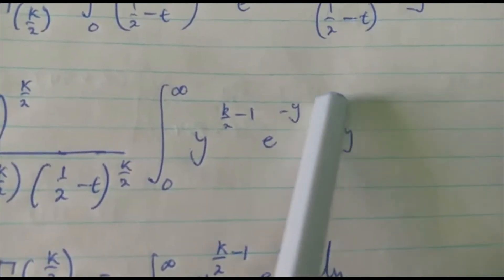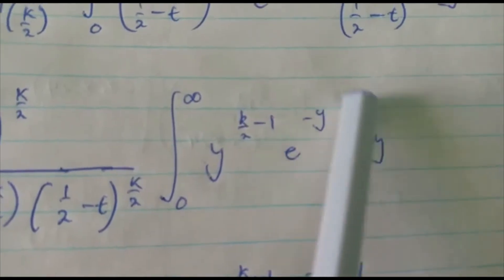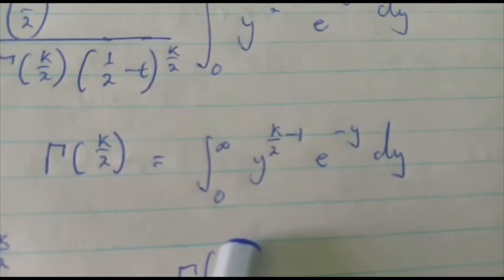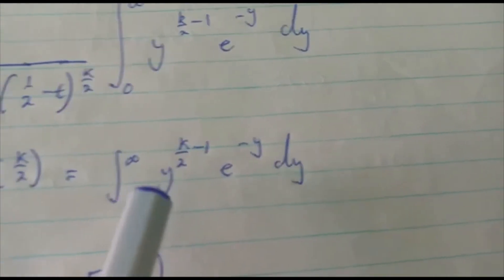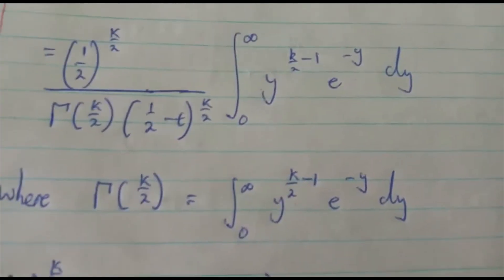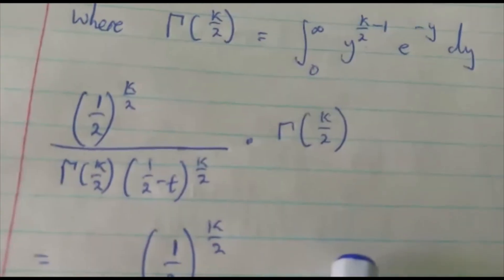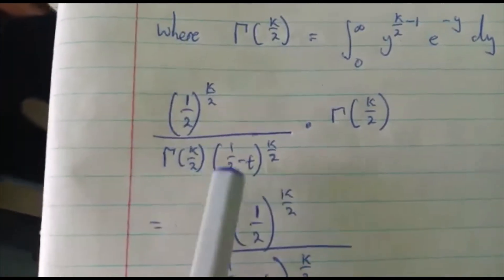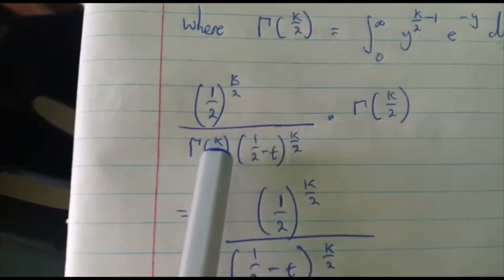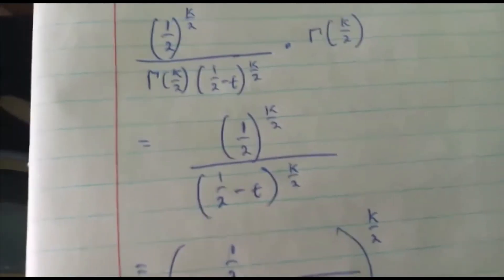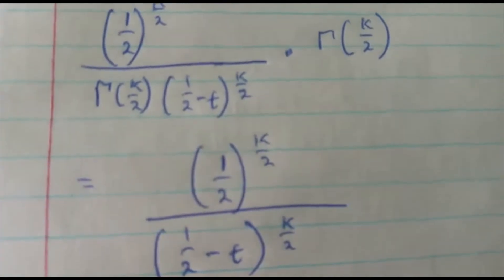Looking closely, this integral is now a gamma function. We identify k, where the power k over 2 matches. We substitute the integral with gamma of k over 2, which cancels with the gamma of k over 2 constant. We are left with half to the power k over 2 over (half minus t) to the power k over 2, and this becomes our moment generating function.